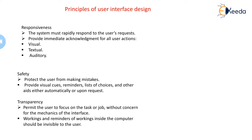Then there is responsiveness. A user's request must be responded to quickly. Knowledge of results — or feedback — is necessary for learning and shapes human performance and instills confidence. More substantial and informative feedback is most common for casual or new system users, while expert users are often content with more modest feedback. Safety means eliminating opportunities for mistakes and confusion, and always providing memory support for the user.